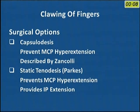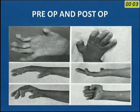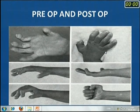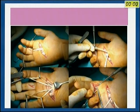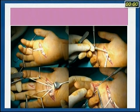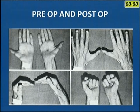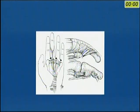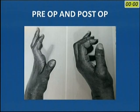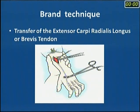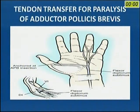In cases of ulnar nerve palsy, you can take the FDS of the ring finger, split it into four tails, and pass them through the lumbrical canals, inserting into the radial sides of all fingers except the little finger where it goes to the medial side. Results after tendon transfer are quite excellent. The Paul Brand technique uses the ECRB — extensor carpi radialis longus — with an additional tendon, palmaris longus, inserted into the lumbrical canals in a palmar direction. Results are quite excellent.